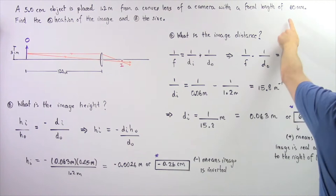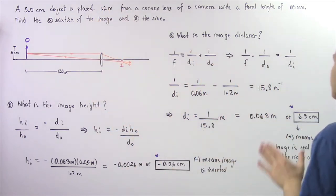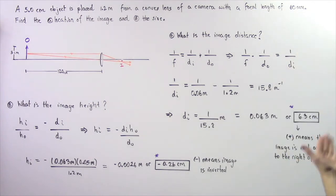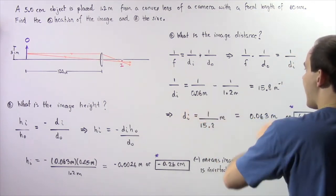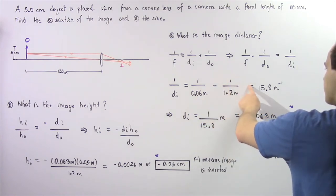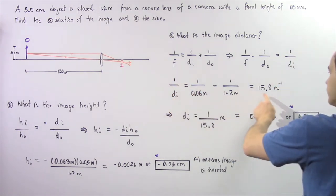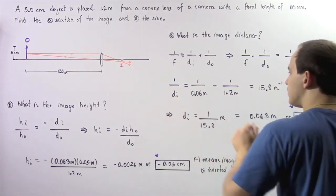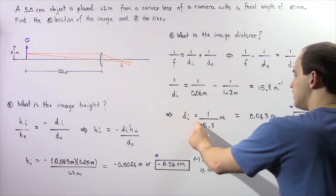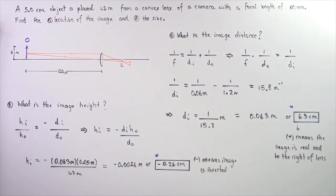We know the focal length is equal to 60 millimeters, and the object distance is equal to 1.2 meters. Converting millimeters to meters by dividing by 1,000, we get 0.06 meters. So 1 divided by 0.06 meters minus 1 divided by 1.2 meters gives us approximately 15.8 meters to the negative 1. We see 1 divided by Di equals this quantity, so rearranging and solving for Di: Di equals 1 divided by 15.8 meters, giving us about 0.063 meters.